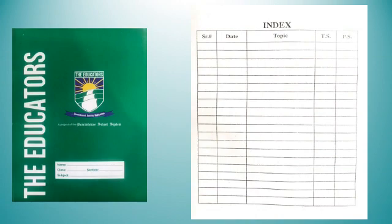Write today's index. First, write the serial number; after that, write the date for which you are working; then write the topic: Remember and Understand, Resource Pack page number 79. I hope this is all clear. Now we have done today's reading and index — it's time for notebook work.